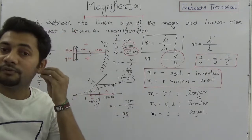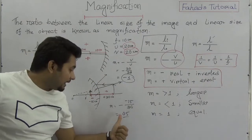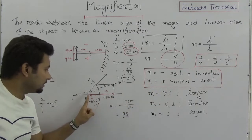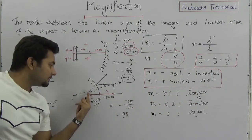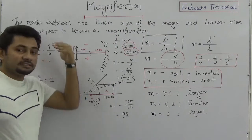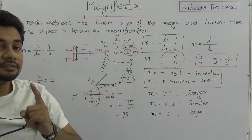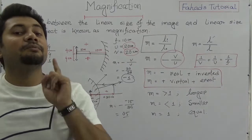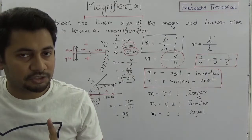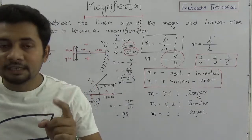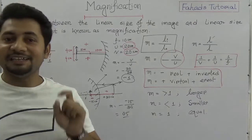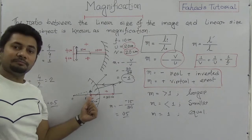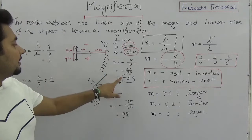The positive value of M = +0.5 means the image is virtual and erect. In summary: when M is negative (from -V/U), the image is real and inverted; when M is positive, the image is virtual and erect.